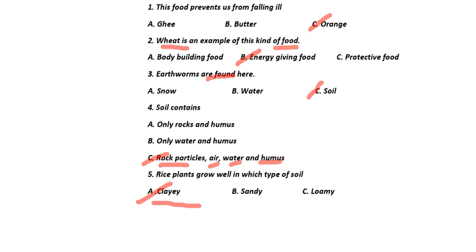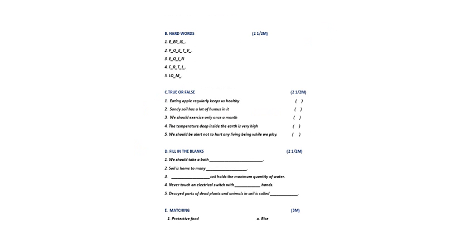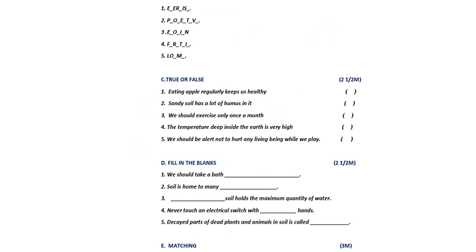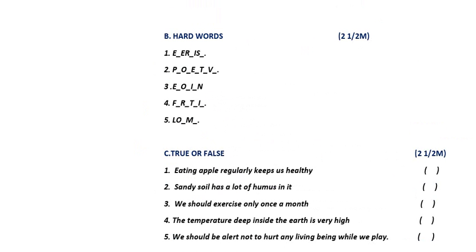Now moving to the next bit — hard words. I am zooming it in. First one: can you guess? The answer is exercise. The spelling of exercise is E-X-E-R-C-I-S-E. Exercise. Second one is protective food. Protective — P-R-O-T-E-C-T-I-V-E. The spelling of protect you already know — add I-V-E to it. So protective is the answer.